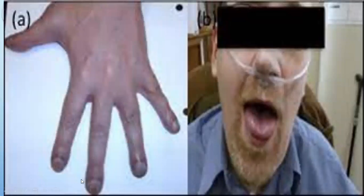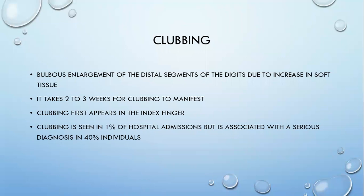This patient has clubbing. We can see cyanosis in the nails. There is a polycythemic mixture; the tongue is cyanosed and he is on oxygen — probably a case of COPD. Next important general examination finding is clubbing. Clubbing is defined as the bulbous enlargement of the soft tissues of the distal segments of the digits. It takes a minimum of 2-3 weeks for clubbing to manifest. Clubbing first appears in the index finger. The presence of clubbing means 40% of the time they will have some serious diagnosis associated with malignancy, suppurative lung disease, or interstitial lung disease.